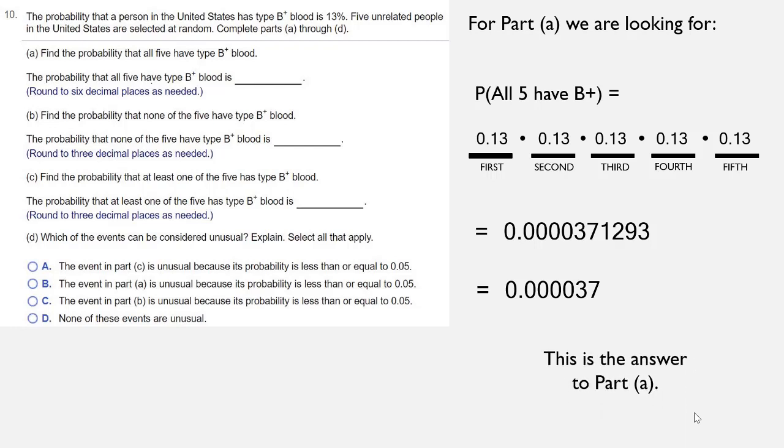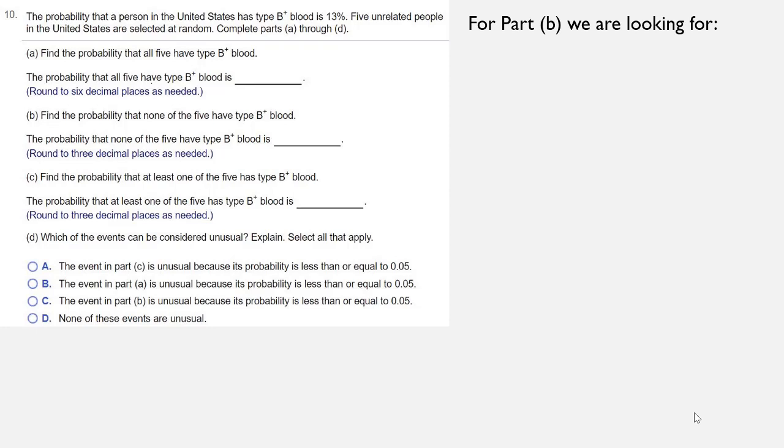In part B, we're looking for the probability that none of them have type B positive blood. So again, just like in part A, we have slots to fill in, five slots. If the probability that somebody has type B positive blood is 0.13, then the probability that they don't have B positive blood is 0.87.